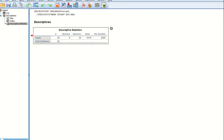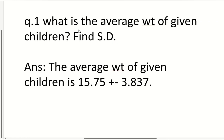This is the value we get: the mean is 15.75 and the standard deviation is 3.837. So through descriptive statistics we found the average weight of the children is 15.75 and the standard deviation is 3.837. That was very easy — nothing complicated. Now let's go to the next question.